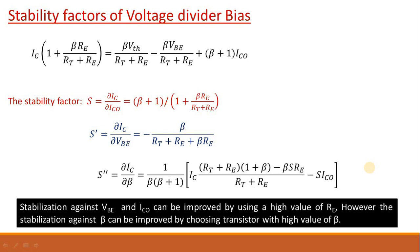We have seen that in the fixed bias there is stabilization against Ico was very poor. That can be taken care in this circuit. So obviously voltage divider bias is better biasing compared to the fixed bias.